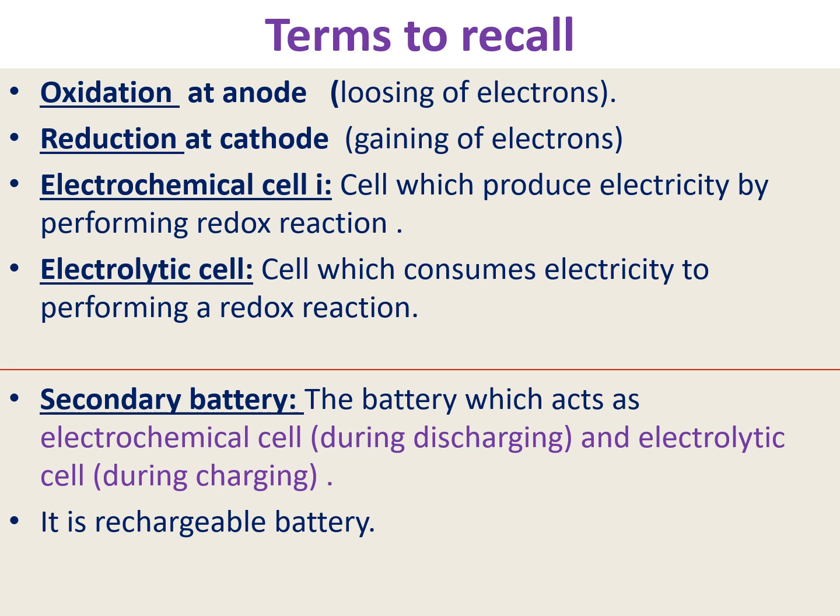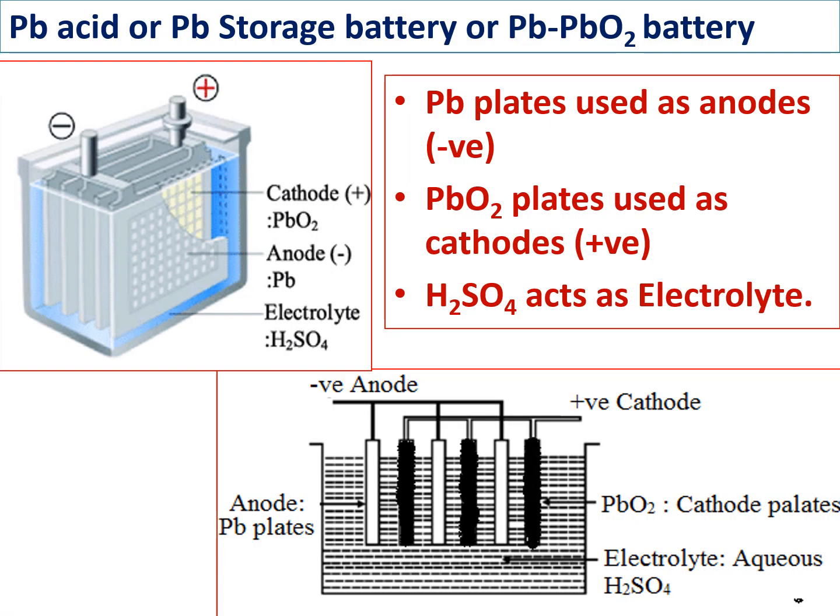A secondary battery acts as both an electrochemical cell and an electrolytic cell. During the discharging process — that is, when the battery is producing electricity — it acts as an electrochemical cell. During the charging process, when we give electricity to the battery (like charging a mobile phone), it acts as an electrolytic cell. That's what makes these rechargeable batteries. The lead acid, lead storage, or lead oxide battery — also called a lead accumulator — is an example of a secondary battery.